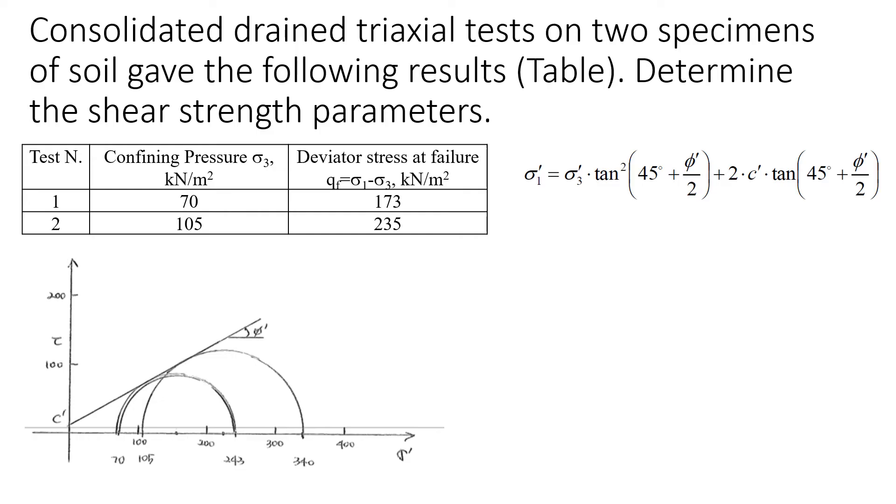Let's look at these examples when we have results from two tests. We have confining pressure which is sigma 3, and we have a deviator stress at failure which in this case is 173. We are required to find the shear strength parameters of this soil.